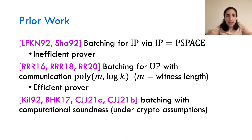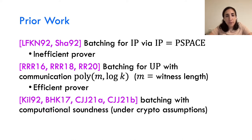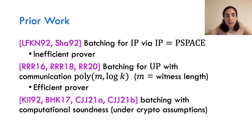Let's discuss a few prior works. Using the IP equals PSPACE theorem, we can actually show batching for every problem in IP, however with an inefficient prover. The line of work of Rottenblum, Rottenblum and Rheingold shows batching for UP, which is a subclass of NP, with communication of poly(m log k), where m is the witness length. The special property about this protocol is that the prover is efficient. There is also another line of work showing batching with computational soundness, however under cryptographic assumptions and with very small communication complexity.